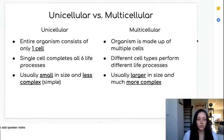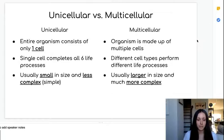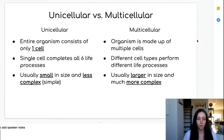This also means that there are different types of cells within that organism to perform different life processes. With multiple cells and multiple types of cells, these organisms are able to have specializations — cells that perform different specialized functions. Being made up of more than one cell, these organisms tend to be much larger in size and also much more complex.